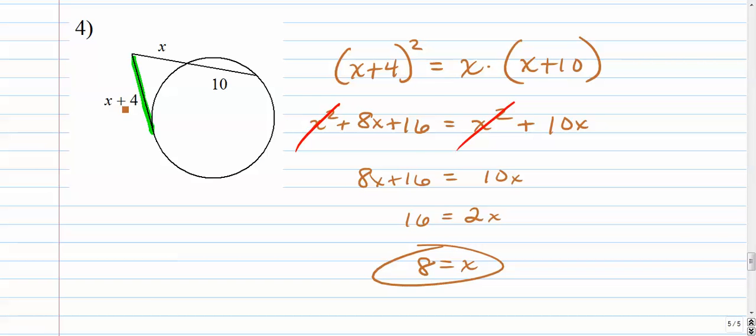And again, let's plug them back in. We get 8 plus 12. 8 plus 4 is 12 squared. That should equal 8 times 18. I think we had one just like that a few problems ago. So that works out.